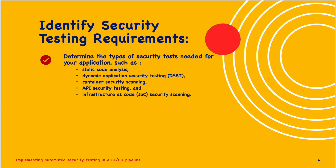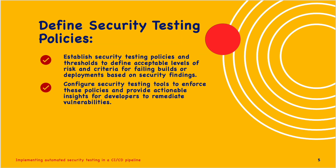Third, define and prepare test cases that cover the identified areas for testing. Integrate a suitable testing tool into the pipeline. Next, define security testing policies: establish thresholds to define acceptable levels of risk and criteria for failing builds or deployments based on security findings. Configure security testing tools to enforce these policies and provide actionable insights for developers to remediate vulnerabilities.